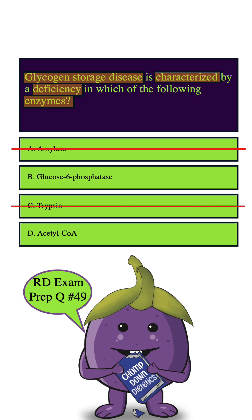How about D? Acetyl-CoA is a central molecule in metabolism, and it links glycolysis and the citric acid cycle. Glycogen storage disease is not caused by an acetyl-CoA deficiency. Therefore, we can eliminate this answer choice as well, leaving us with B.